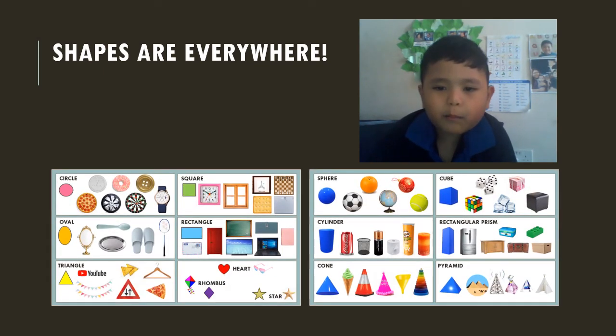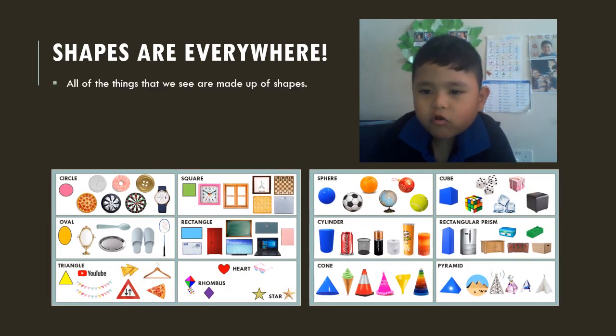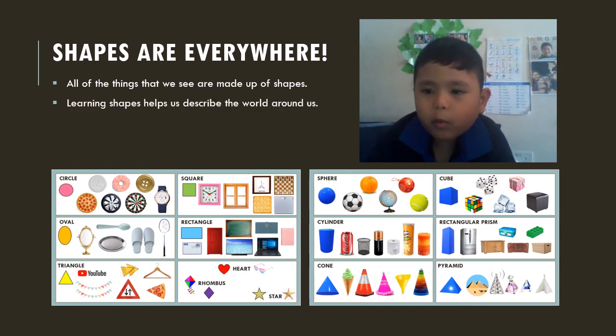Now that's a lot of shapes. Everything that we see is made up of shapes. Shapes are everywhere. Shapes help me describe the world around us. With the help of shapes, I am able to recognize and sort objects based on their form.